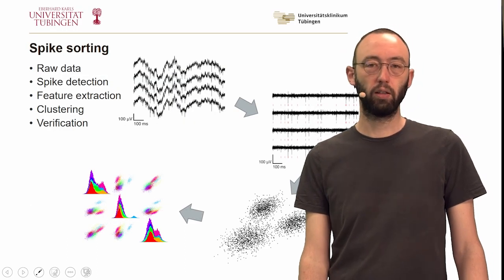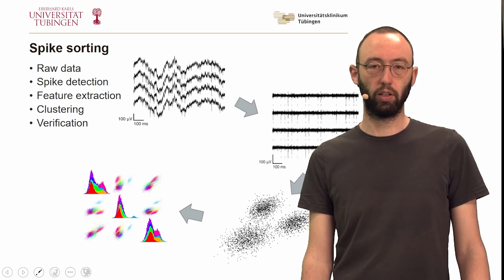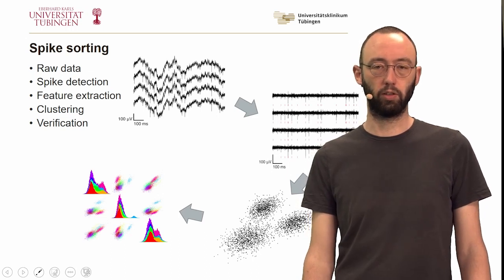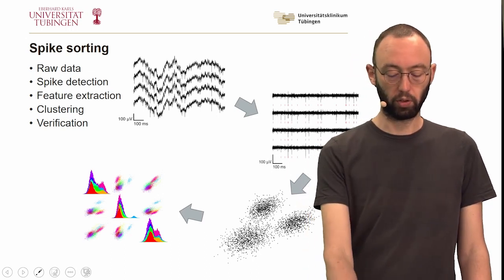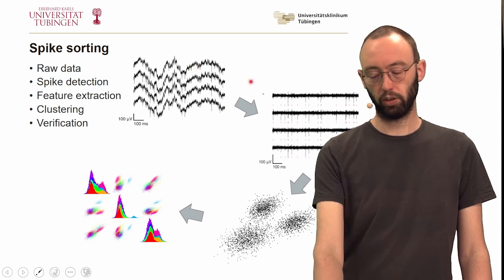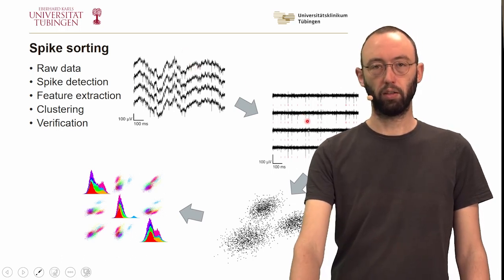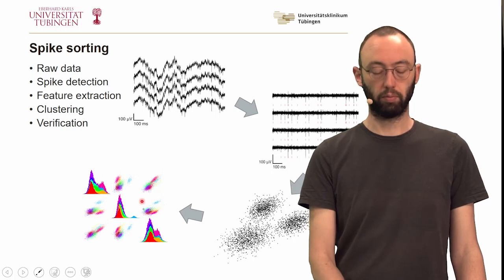Just as a reminder, this was the outline of the entire process that we will cover in the first three lectures. We start with raw data, we filter to detect spikes, then we perform feature extraction and clustering.